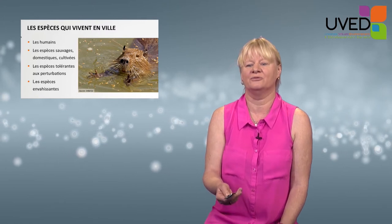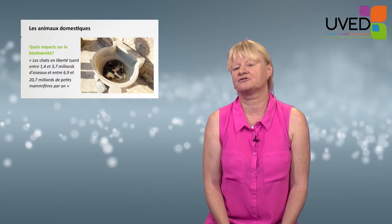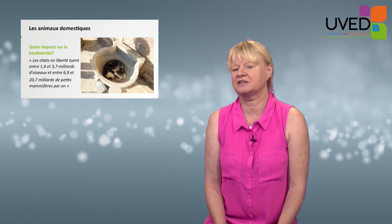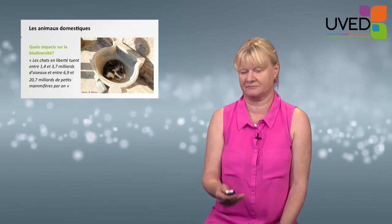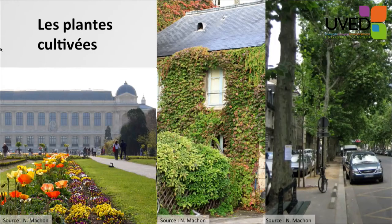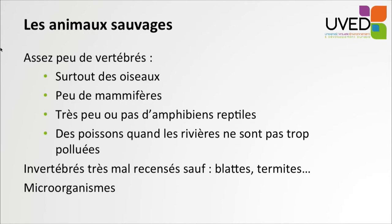Here we have the Coypu or Nutria, which lives in town rivers. Cats are predators for small mammals and birds, so domestic animals can play an essential role. Cultivated plants are chosen by humans to decorate the town — parks, roofs, walls, and street trees, which are there to provide shade for pedestrians.